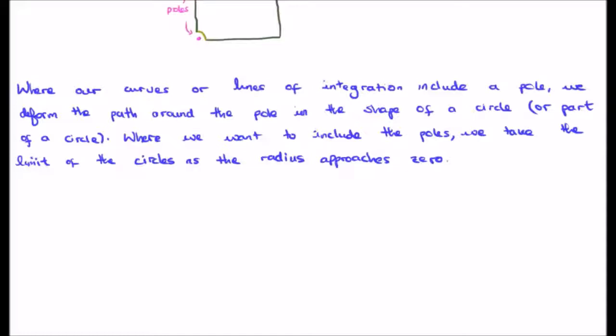Where our curves or lines of integration include a pole, we deform the path around the pole in the shape of a circle or part of a circle. Where we want to include the poles, we then take the limit of the circle so the radius approaches 0.